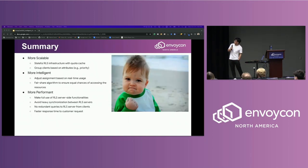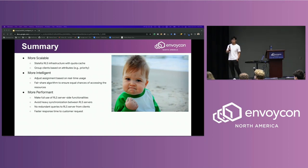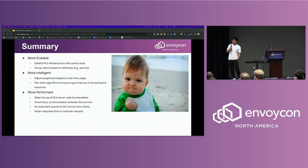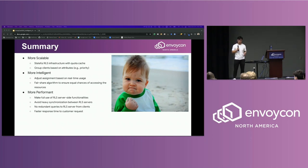Let me summarize the design and wrap up. First, this design is more scalable — the stable cache infrastructure avoids redundant queries to the server. This design is also more intelligent because the rate limiting server can adjust assignments based on real-time client usage reports. Last but not least, the design is more performant: on the server side it makes full use of server-side functionality and avoids heavy synchronization between different backends; on the client side it avoids redundant queries and responds to requests faster.